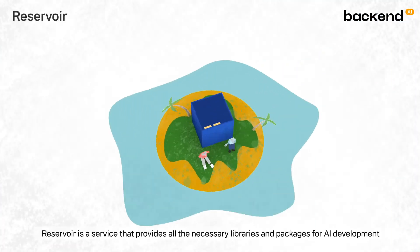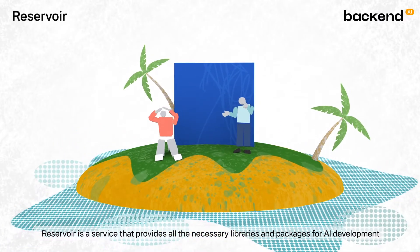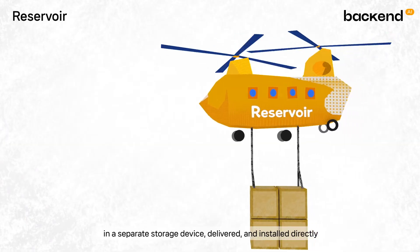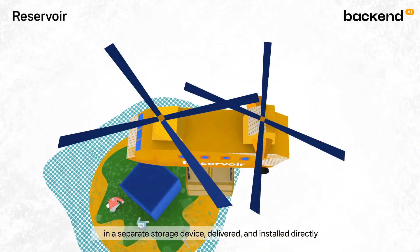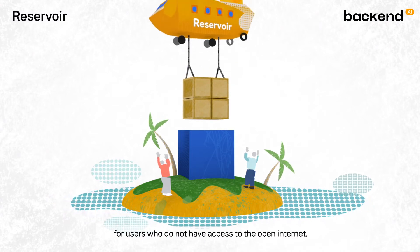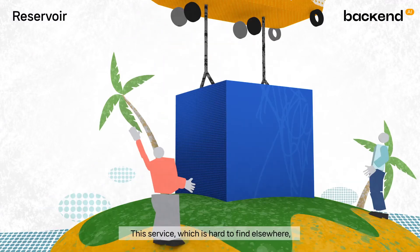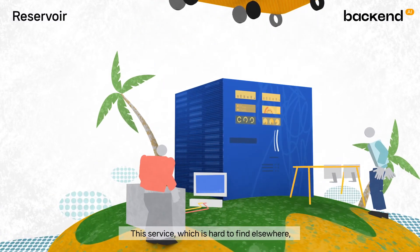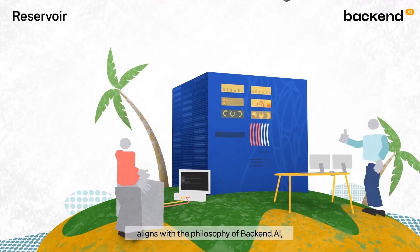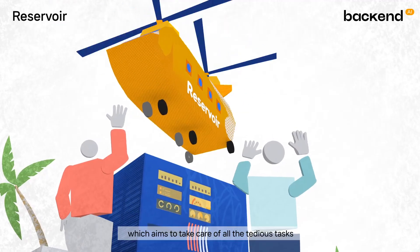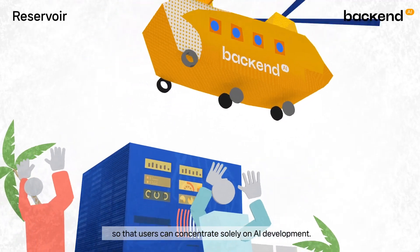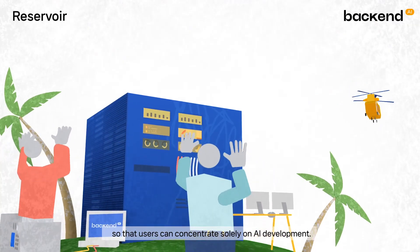Reservoir is a service that provides all the necessary libraries and packages for AI development in a separate storage device, delivered and installed directly for users who do not have access to the open internet. This service, which is hard to find elsewhere, aligns with the philosophy of Backend.ai, which aims to take care of all the tedious tasks so users can concentrate solely on AI development.